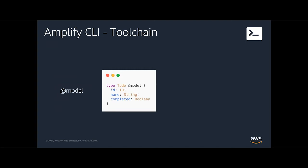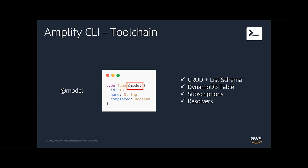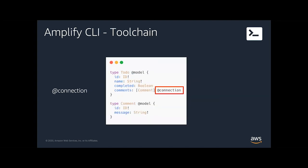@connection allows you to model one-to-many and many-to-one relationships between data types. @model is a way to deploy an entire GraphQL API from a single type — it creates all CRUD operations (create, read, update, delete, list), all the resolvers, and a DynamoDB table for your type, just from that single directive. The @connection directive allows you to easily create relationships between types, such as a blog app with posts and comments, enabling data access patterns like getting comments by a post ID.